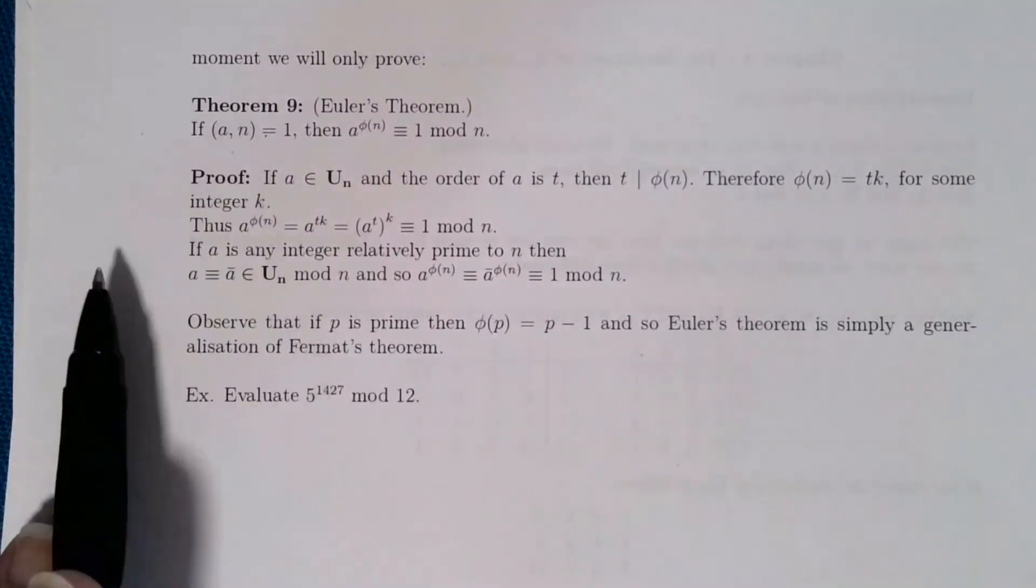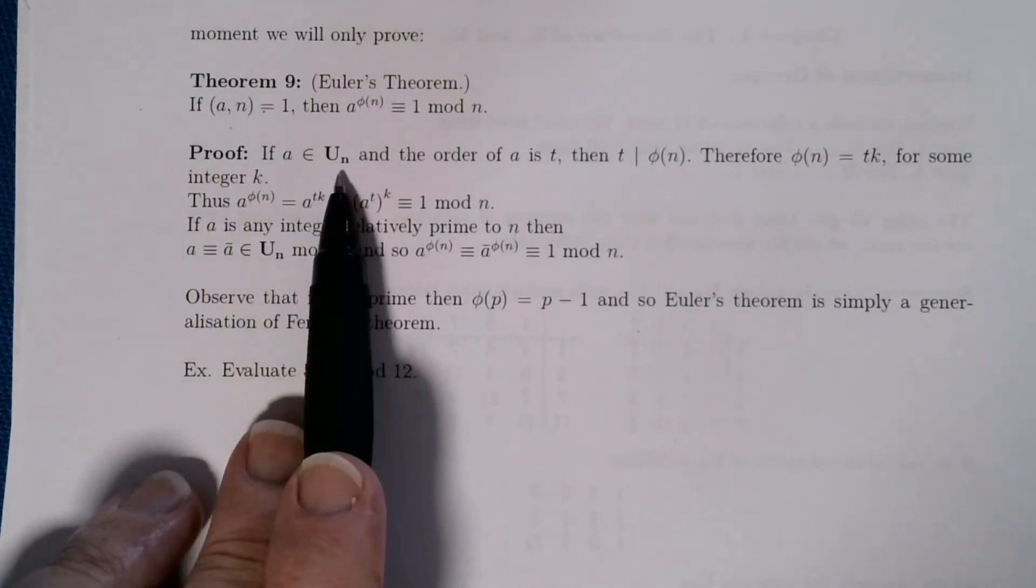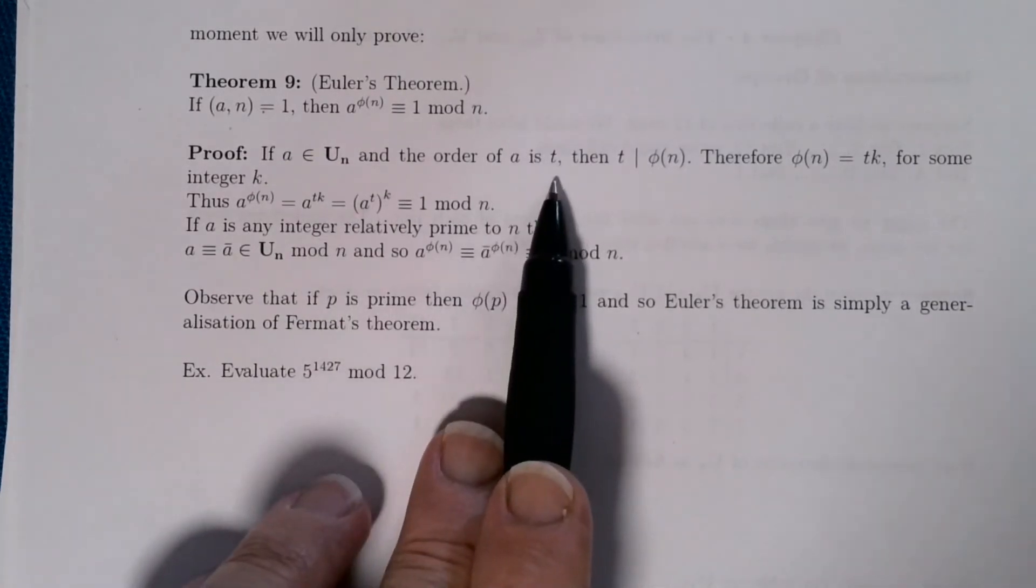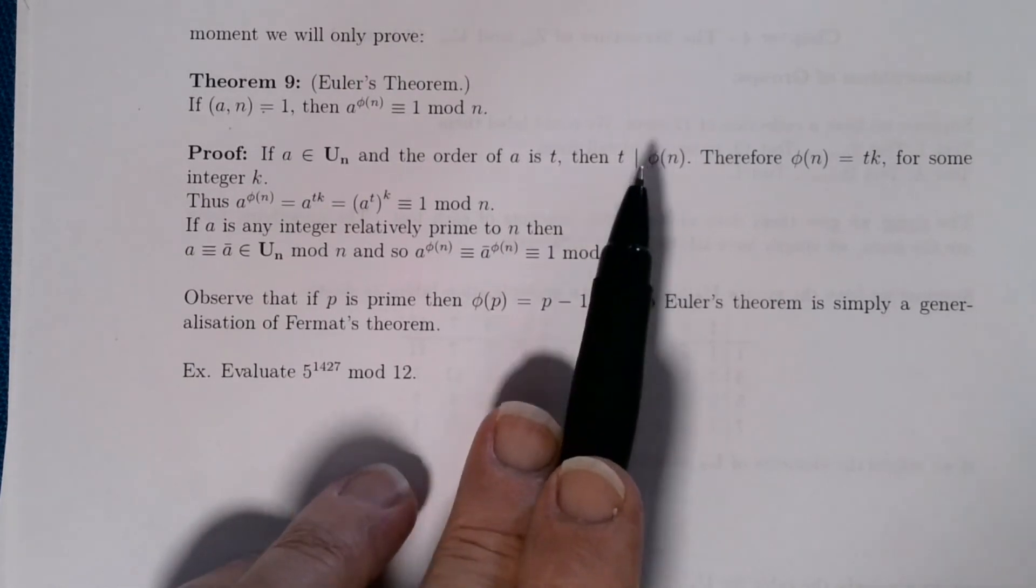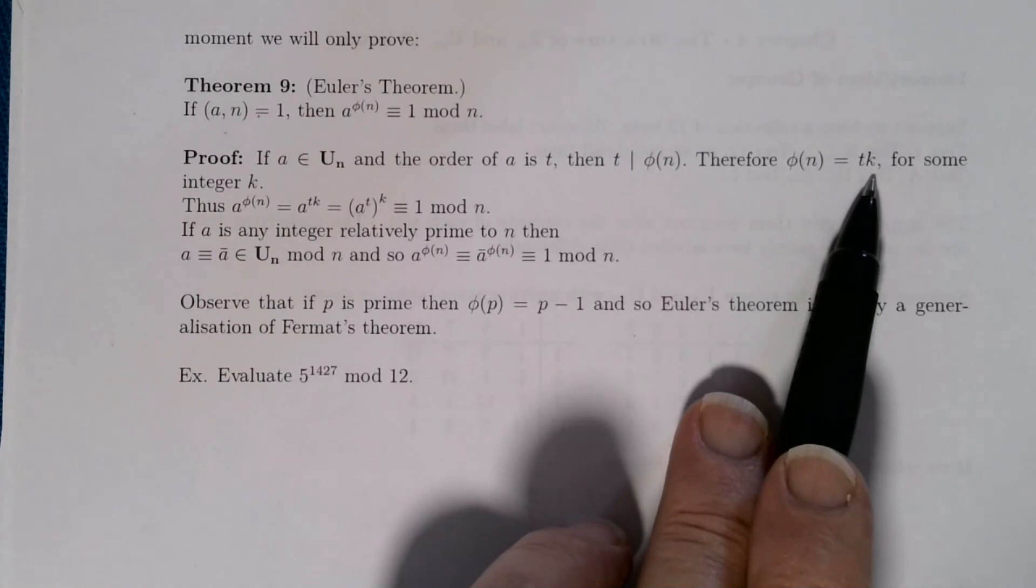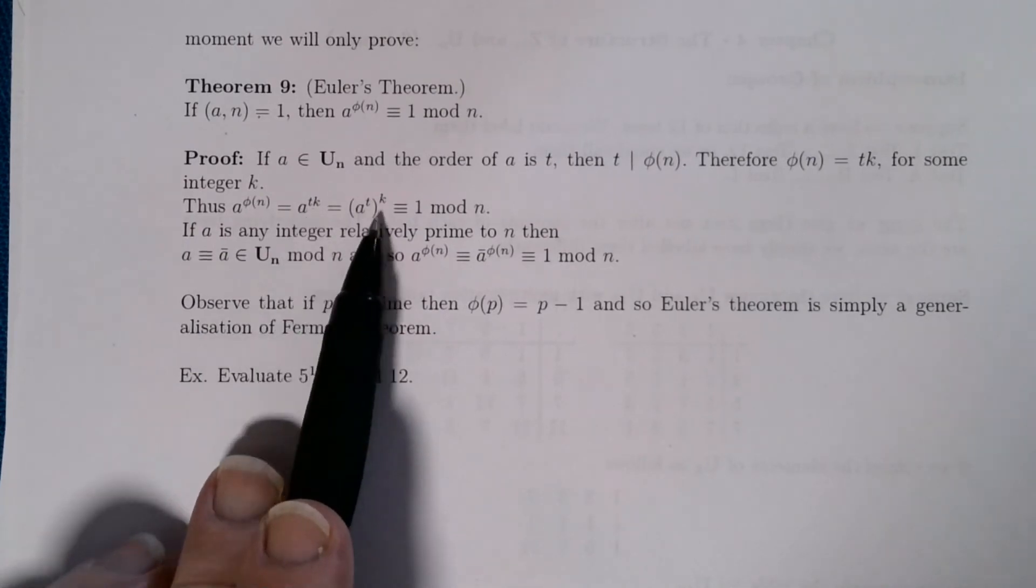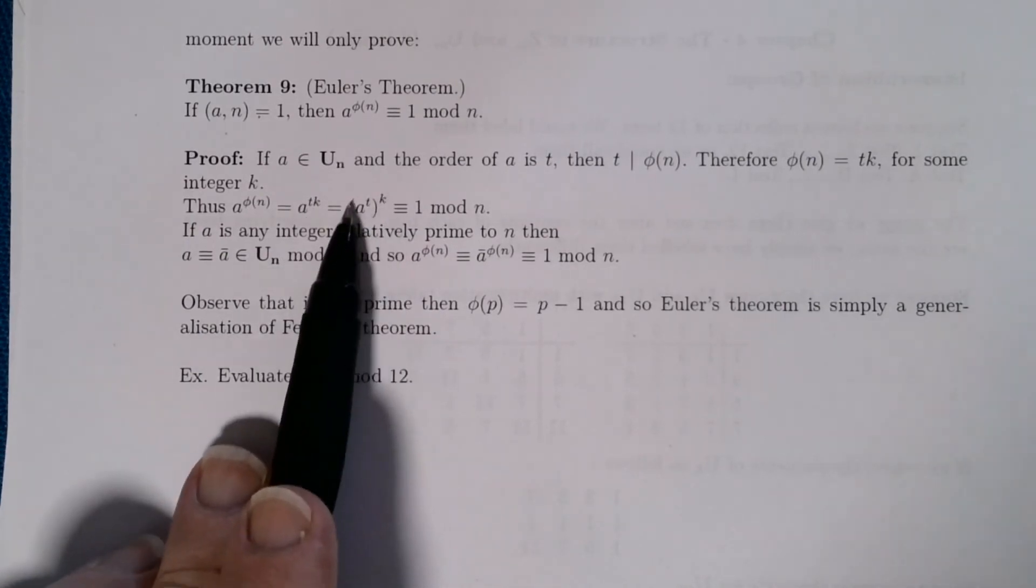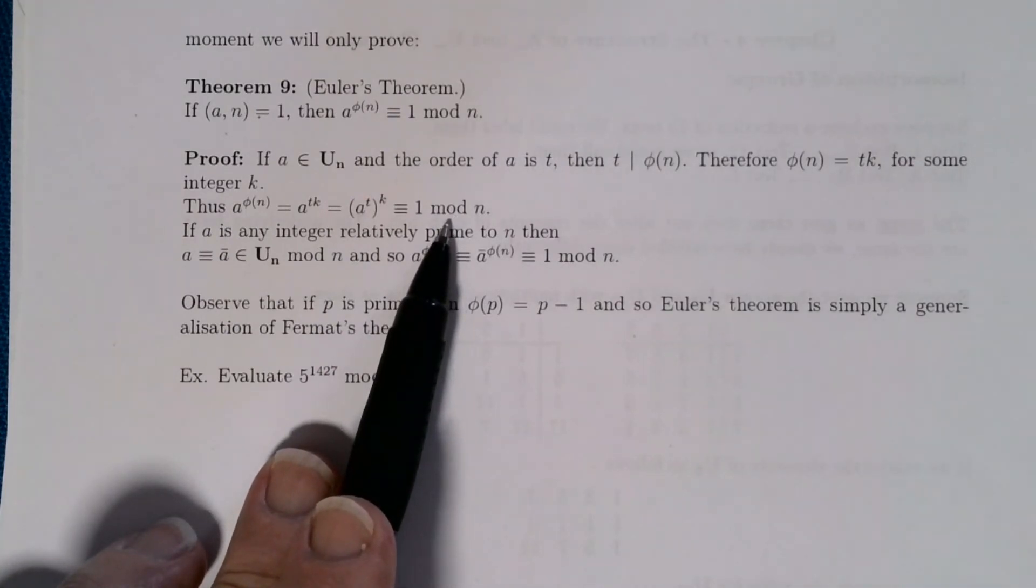Now again, the proof of this is fairly easy now that we've got Lagrange's theorem. So if a is in U_n, and a has order t, then we know that t has to be a factor of φ(n), because the order of the element must divide the order of the group. So that says φ(n) is some multiple of t, k times t for some integer k. And a^φ(n), then, is just a^t raised to the k, which is (a^t)^k. And a^t is 1, because a had order t. And it falls out so nicely. Nice example of where the abstract algebra, the group theory, can be used to prove the number theoretic result really quickly.